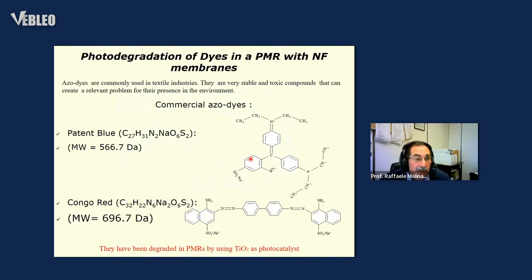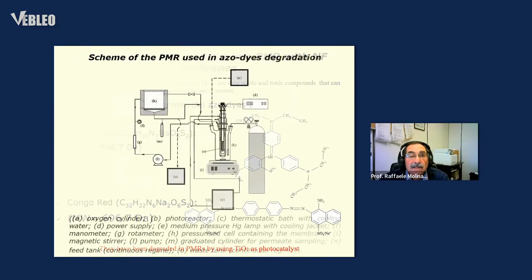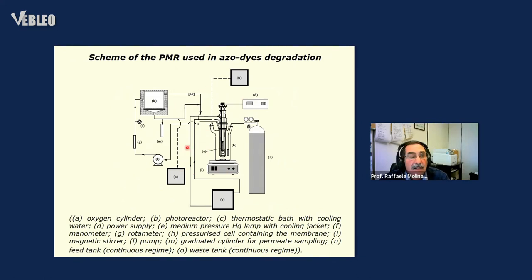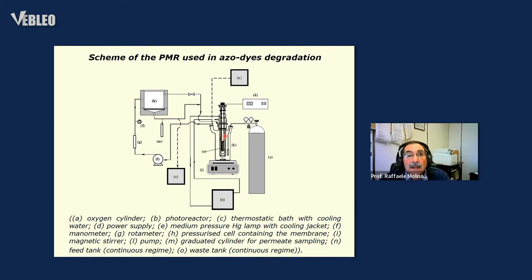Concerning the photodegradation reaction, we start with the degradation of dyes in water. Two cases are patent blue and Congo red dyes, which were degraded in the PMR using titanium dioxide as a photocatalyst. Here is the scheme of the photoreactor, with the cell containing the flat sheet membrane. This scheme can work in a closed or open loop. The closed loop means complete recirculation between the photoreactor and the membrane cell, where the retentate comes back and also the permeate comes back to the photoreactor.